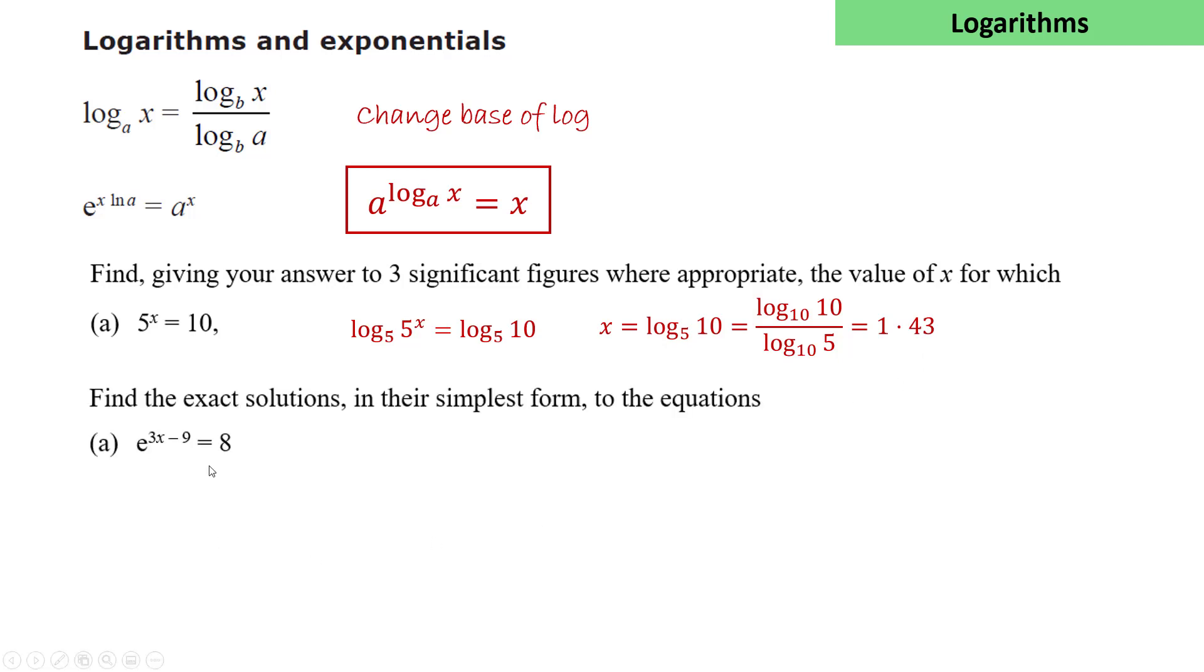Another example, solve e^(3x-9) = 8. We take the natural logarithm of both sides. So ln(e^(3x-9)) is 3x - 9. That will equal ln(8), which is ln(2³), or 3ln(2). We divide through by 3 and rearrange to get x = 3 + ln(2).